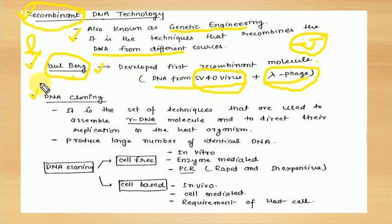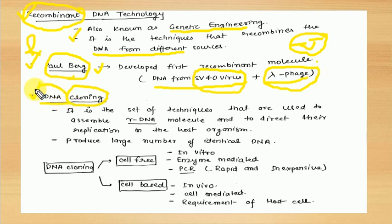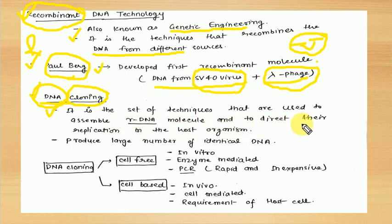What is DNA cloning? Cloning means making multiple copies — basically multiple copies of DNA. So what is the definition? It is the set of techniques that are used to assemble recombinant DNA molecules and to direct their replication in the host organism.